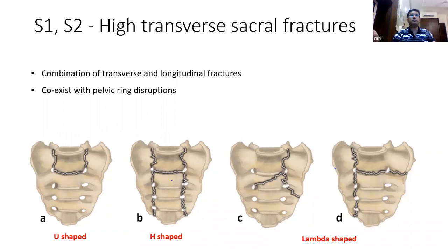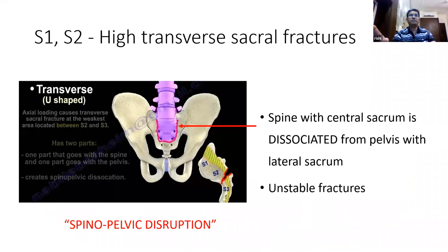These fractures are classified into three shapes: U-shaped, H-shaped, or lambda-shaped. Many fractures may not fit neatly into one type — sometimes a U with extensions — but the basic principles of management are similar. These high transverse sacral fractures are typically spinopelvic disruptions. The central portion of the sacrum is completely dissociated from the pelvis — that part of the sacral bone remains attached proximally to the spine, while the rest of the sacral bone remains attached to the pelvis. So the spine and pelvis are completely disrupted from each other, mandating treatment as an unstable fracture.